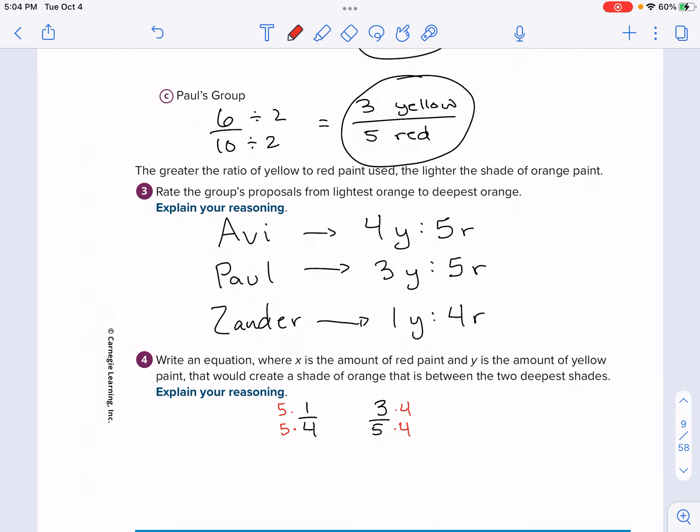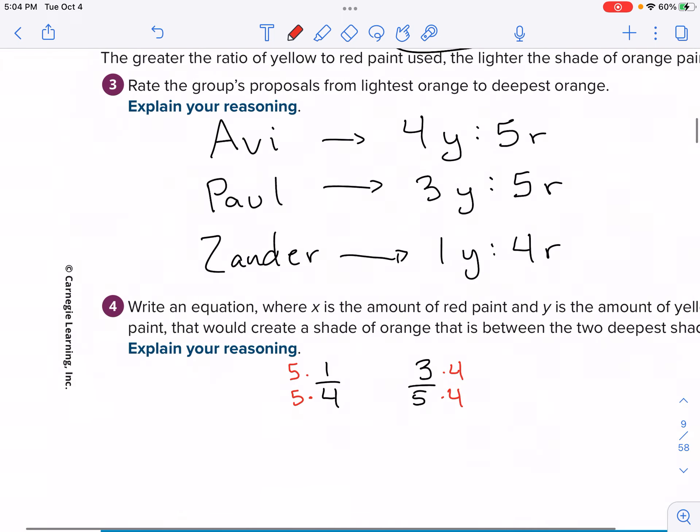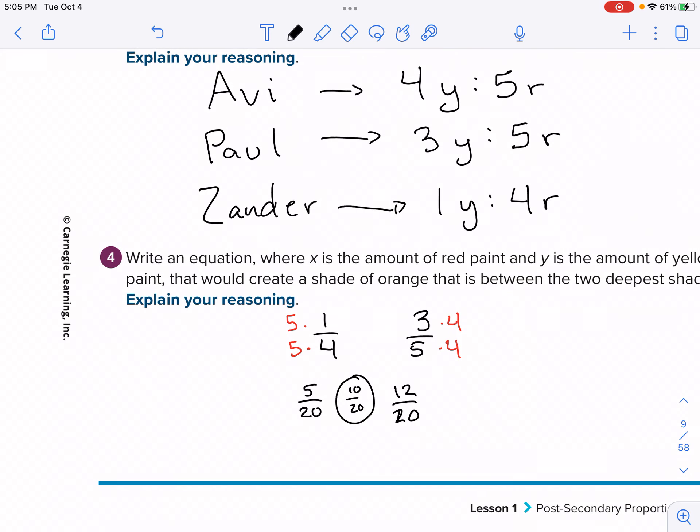It says write an equation where X is the amount of red paint. Y is yellow paint. We want to create some type of orange that is between the two deepest shades. So what do you mean by this? Two deepest shades we have for Xander was the darkest one. That is 1/4 and Paul, which is the middle one, which is 3/5. We got to find a fraction that's in between both of these. So it's kind of hard to tell at least right now. So what I recommend you do, let's use what we are understanding yesterday. Let's multiply and create a common denominator. And how I'm going to do that is I'm going to multiply the first fraction by five and second fraction by four. And we can make a comparison using these now two fractions.